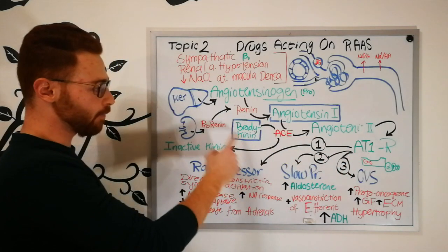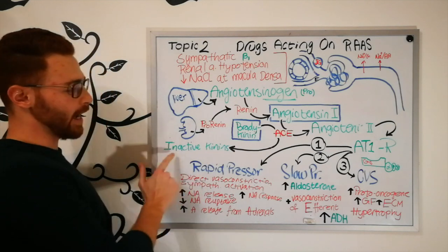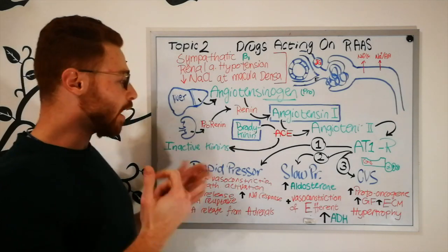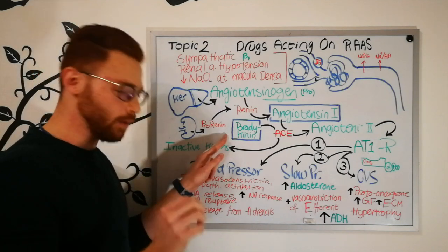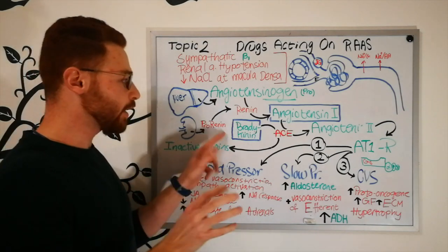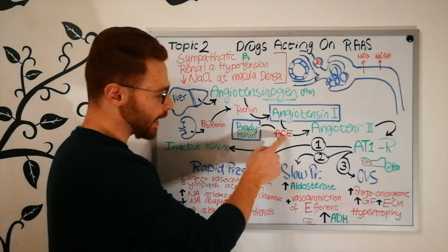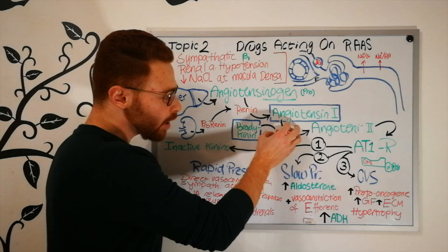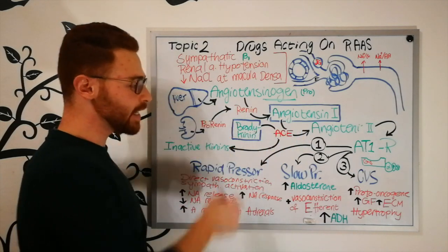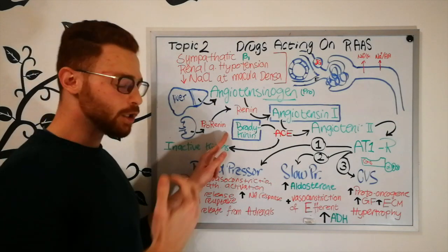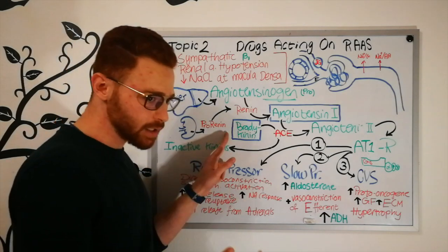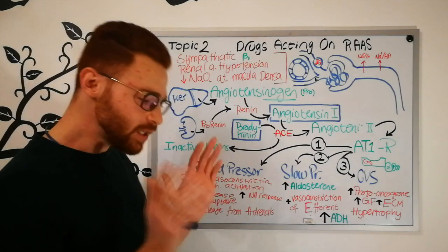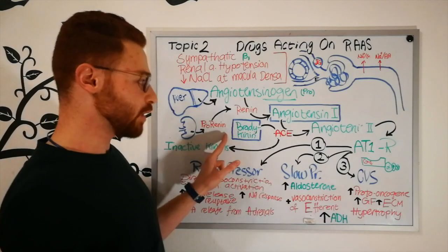Besides converting angiotensin I to angiotensin II, the ACE enzyme is also responsible for degrading bradykinin into inactive fragments. Bradykinin is both a vasodilator and an activator of sensory nerve fibers in the lung. If the ACE enzyme is inhibited or not functioning, bradykinin accumulates, irritating those sensory fibers and causing coughing — an important side effect to keep in mind.